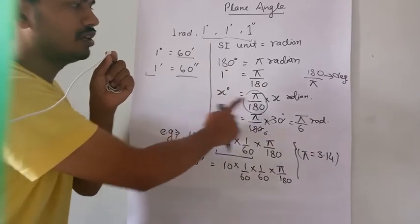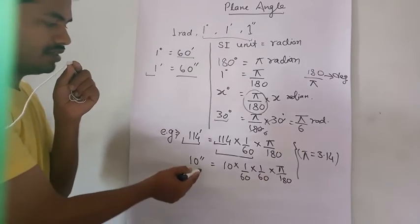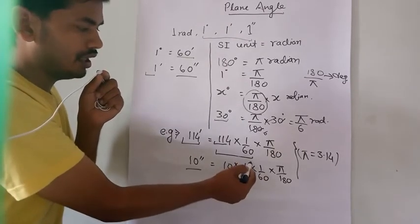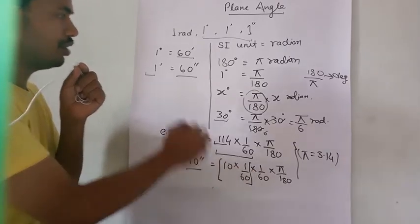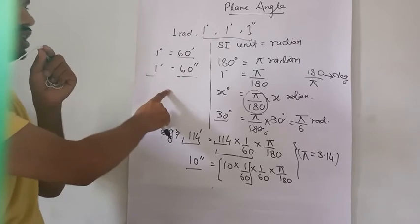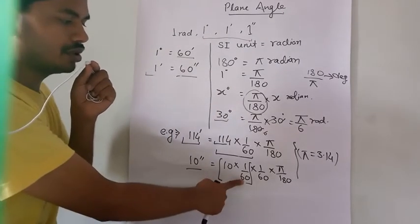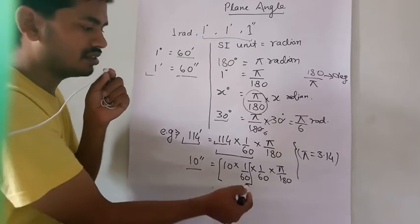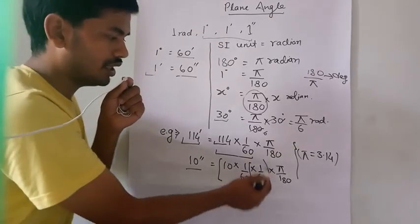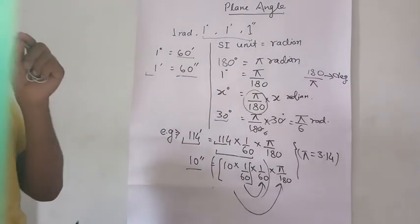Another example: 10 seconds. So 10 into one by 60 converts it into minutes, because in 60 seconds there is one minute, so in one second there is one by 60 minute. This 10 seconds is first converted into minutes, then this minute is converted into degree, and finally this whole degree is converted into radian. This is the full conversion process.